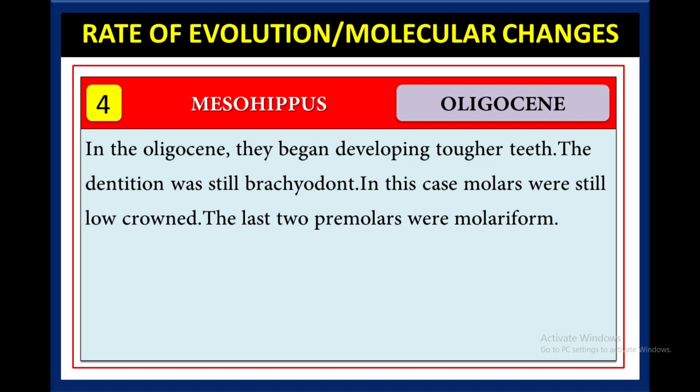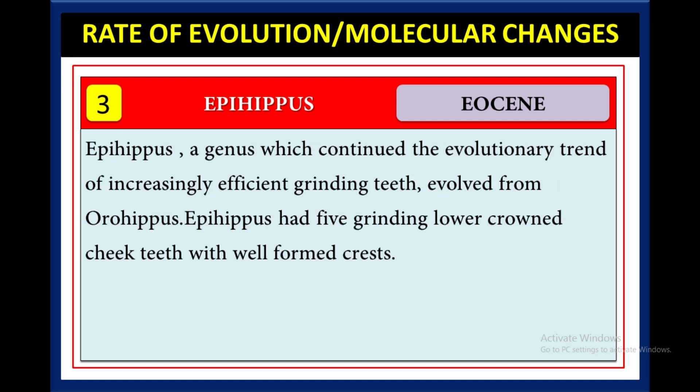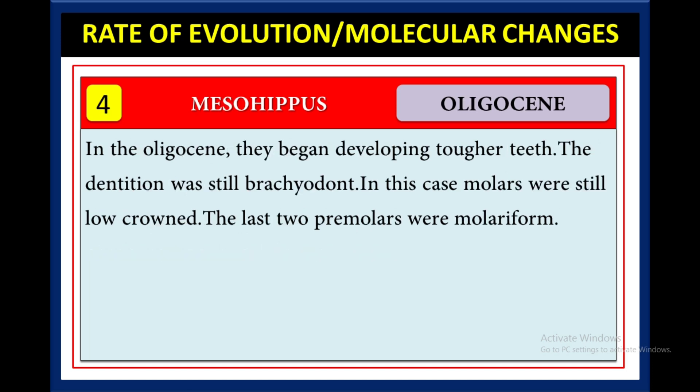Then in the Oligocene period, Mesohippus came. In the Oligocene, they began developing tougher teeth. The dentition was still brachydont — molars were still low-crowned. The last two premolars were molar-form.